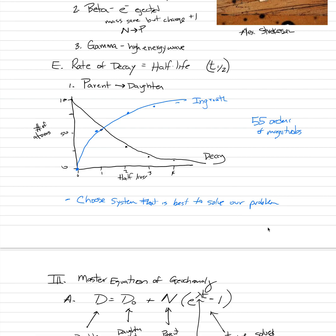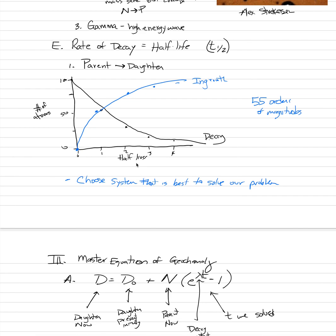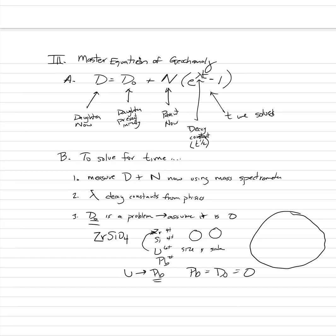Geochronology mini lecture number three. The main points were radioactive decay and ingrowth of parent and daughter isotopes, relating to half-lives. We can solve this numerically using the master equation of geochronology: D equals D-naught plus parent times e to the lambda-t minus 1. That is the equation — we can measure each of those variables, and sometimes we have to make an important assumption.